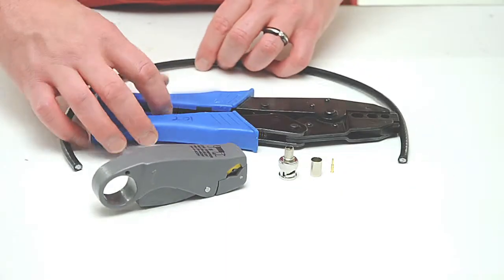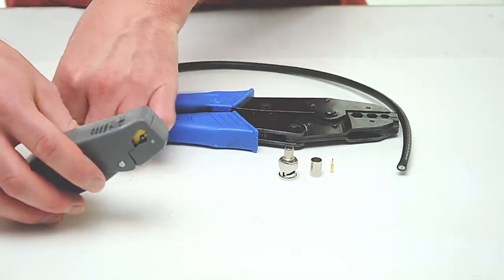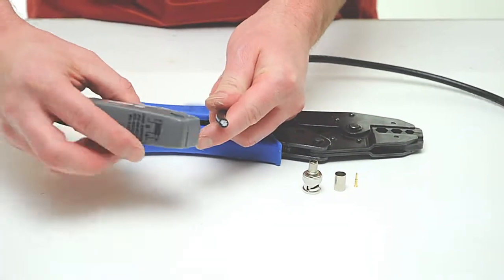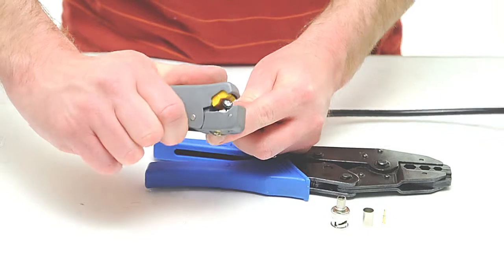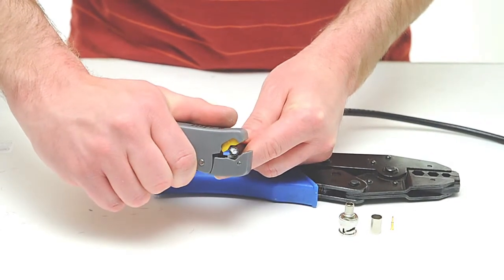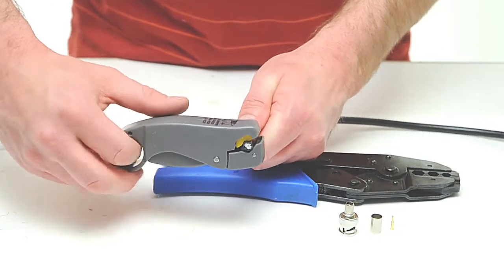To begin, take your coax stripper and remove the outer jacket and dielectric of the cable. The advantage of using a coax stripping tool is that it cuts both the outer jacket and dielectric at the same time.